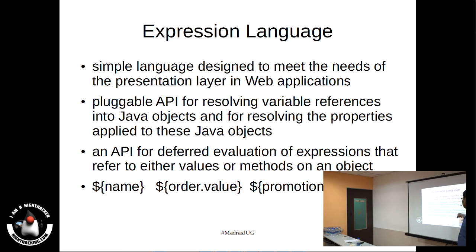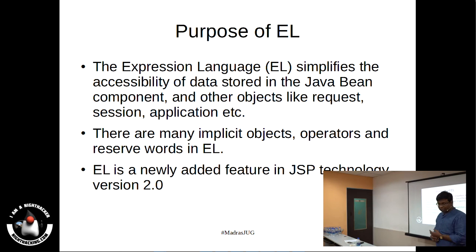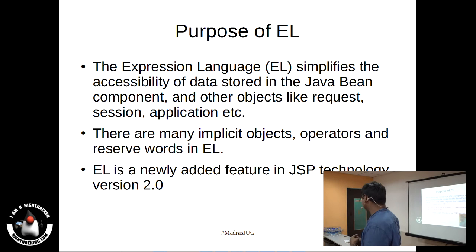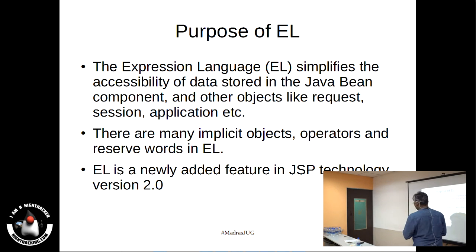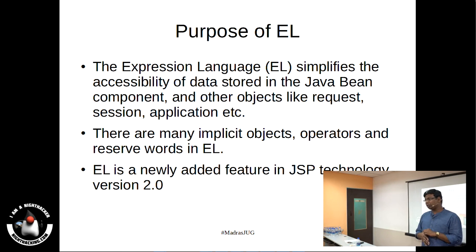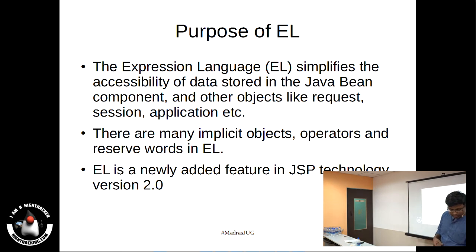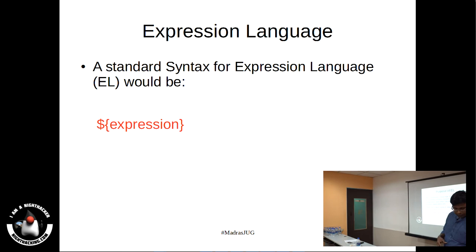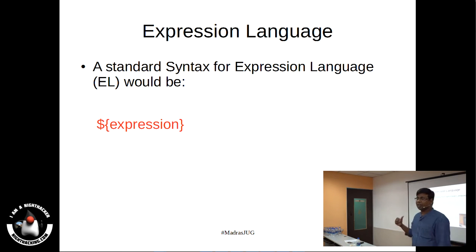EL is an API for deferred evaluation of expressions that refers to either values or methods on an object, such as getValue, or it can refer directly to a variable. It was introduced in JSP version 2.0, and JSP 2.1 and 2.2 have come up, and with Java EE 7 specification — the recent one — you can see a lot of improvements in terms of JSP.